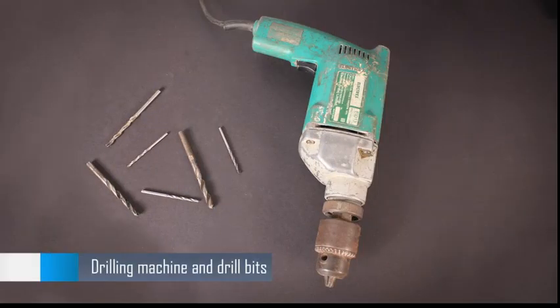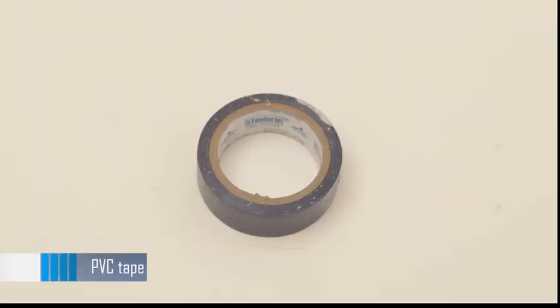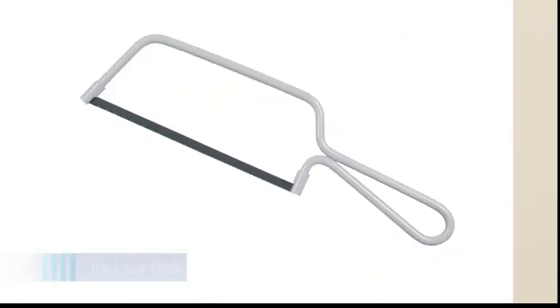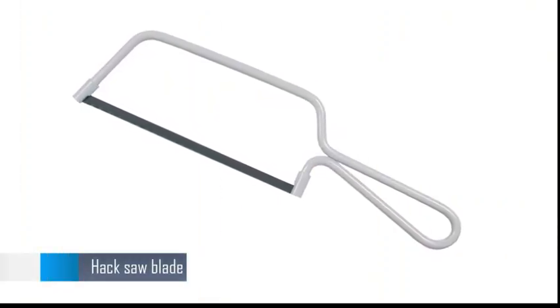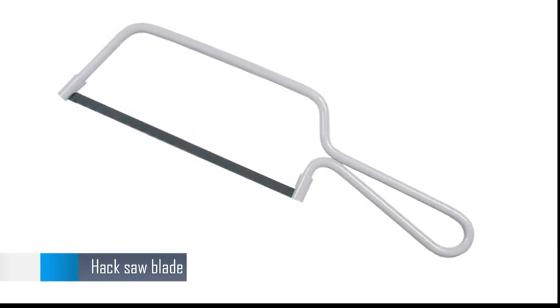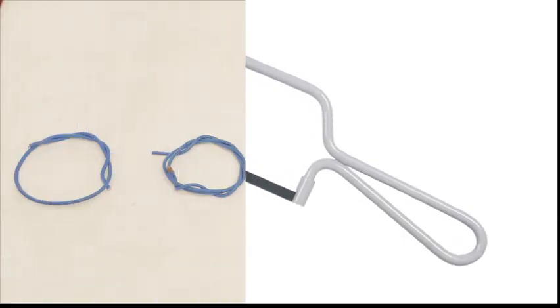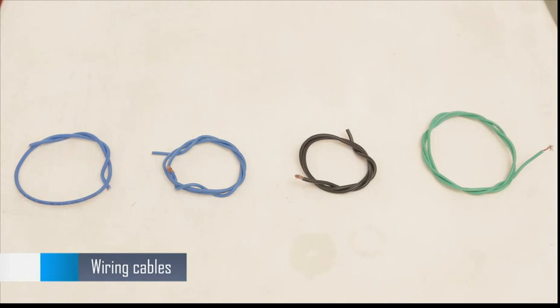Drilling machine and drill bits, PVC tape, Haxo blade—also important for cutting boards and many other things—wiring cables. We will require a lot of these, of course. Hope you remember what each color indicates.